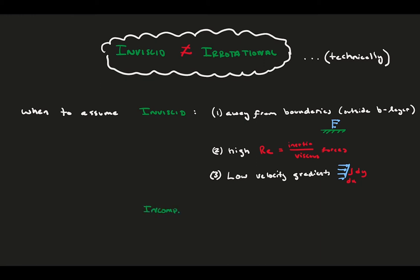To assume the flow is incompressible, it's a bit more clear. You want to be sure the flow is low speed relative to the speed of sound, so a Mach of less than 0.3 is a good rule of thumb. Also, liquids are almost always safely assumed incompressible.